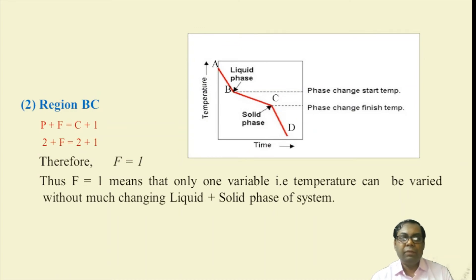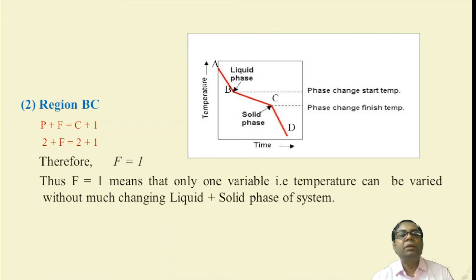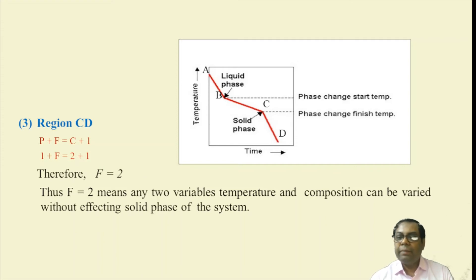In region BC, P = 2 and C = 2, so from the equation F = 1, meaning only one variable — temperature — can be varied without significantly changing the liquid-plus-solid phase of the system. In the final region CD, P = 1 and C = 2, giving F = 2, meaning two variables — temperature and composition — can be varied without affecting the solid phase of the system.